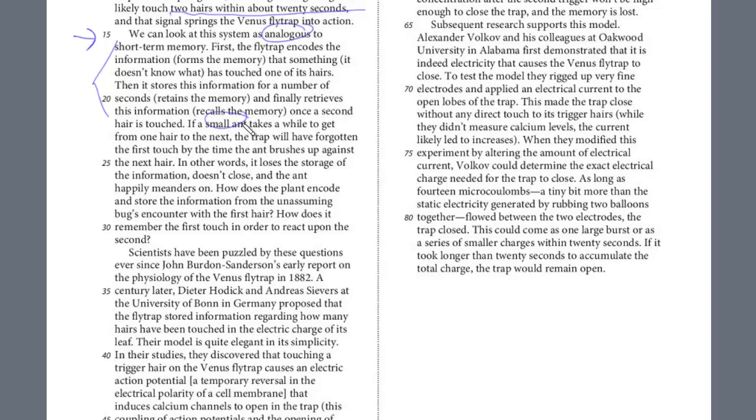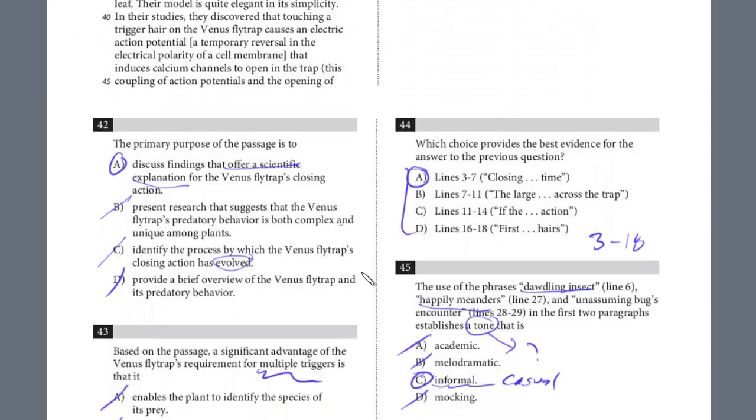So this is sort of explaining exactly how it's done. We have an example, a small ant. It might have brushed up against the next hair, it's too small, and so it doesn't close. But if the plant encodes and stores information from an unassuming bug's encounter from the first hair, it's really explaining how does it remember the first touch and the second. This example just helps sort of explain it. We also had analogous, which means it's giving an analogy of this system. It's like short-term memory and the retrieval process. So let's look at the answers here.